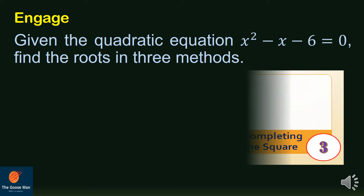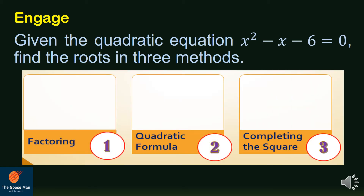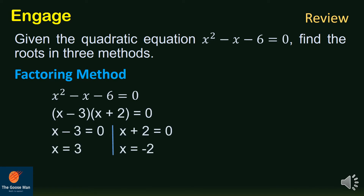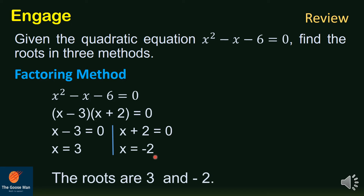The three methods are: number one, factoring; number two, quadratic formula; and number three, completing the square. Given x squared minus x minus 6 equals 0, using the factoring method, the factors are (x minus 3)(x plus 2) equals 0. Applying the zero property, x minus 3 equals 0 gives x equals 3, and x plus 2 equals 0 gives x equals negative 2. So the roots are 3 and negative 2.